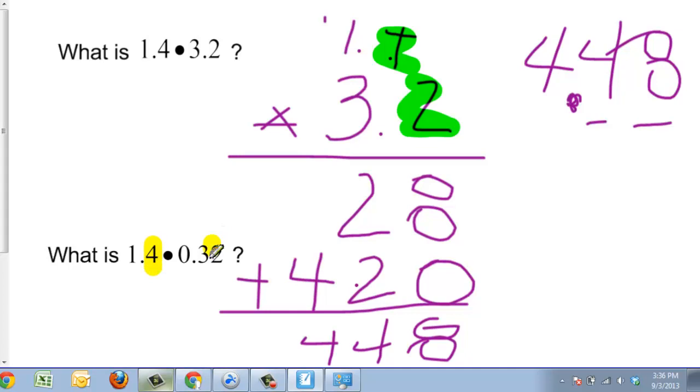I notice I have 1, 2, 3 digits after the decimal point there. I go over here, I'm still going to write 4, 4, 8. But now I need to have 1, 2, 3 places after the decimal point. So my decimal point is going to go here in front of the 4.